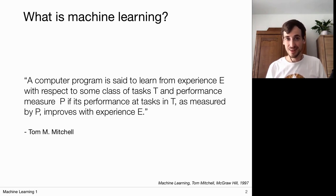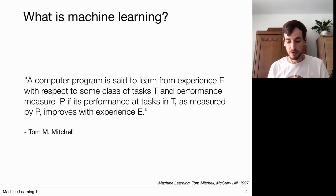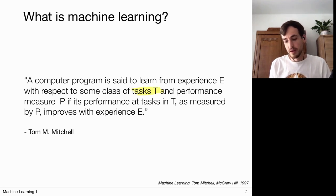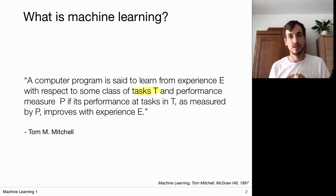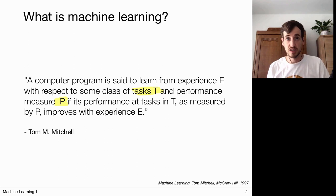This is a beautiful sentence but it's very hard to parse, so let's break it down into three core components. First of all, a computer program is designed to perform some task T — we want to automate some process, and we call this the task T. In this context of machine learning, such an algorithm always comes equipped with a performance measure P, which is a way of quantifying how well the algorithm is doing its job. We basically want to optimize this performance measure.